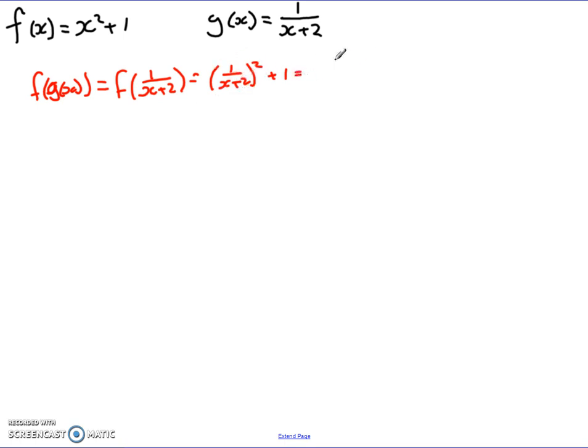Then it's the case of simplifying. So if I square this bracket, I get 1/(x+2)² because 1 squared is just 1, and then I've got a plus 1. Now this plus 1, to put in one big fraction, I can write as (x+2)²/(x+2)². So I get 1/(x+2)²